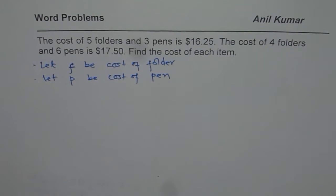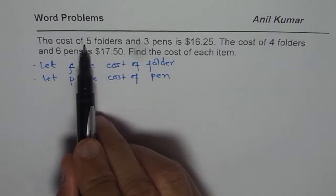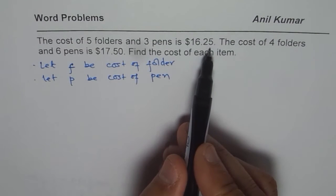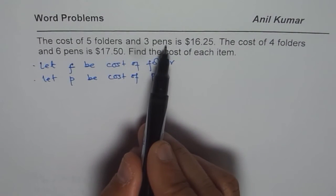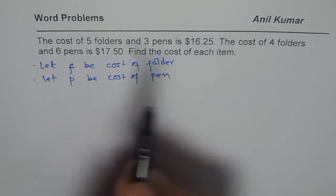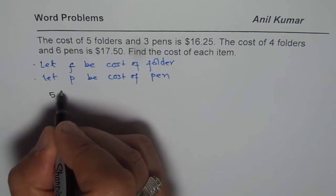And then you need to translate these statements into equations. The cost of 5 folders and 3 pens is $16.25. 5 folders means 5 times F.